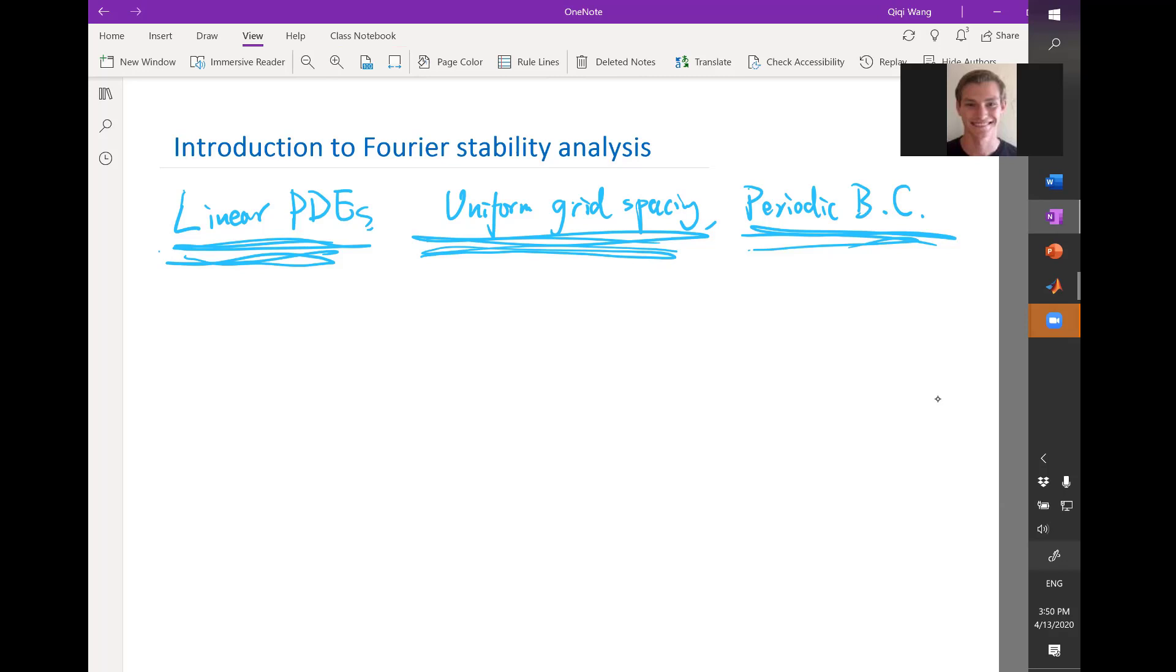That usually means you have two separate requirements for the stability. First of all, your scheme has to be stable for periodic BCs. It is very rare to see that if you have an unstable scheme for periodic boundary conditions that are magically made stable by introducing some boundary condition. So you have to have a stable scheme with periodic boundary conditions. And in addition, your particular discretization of the boundary condition should not introduce additional instability.